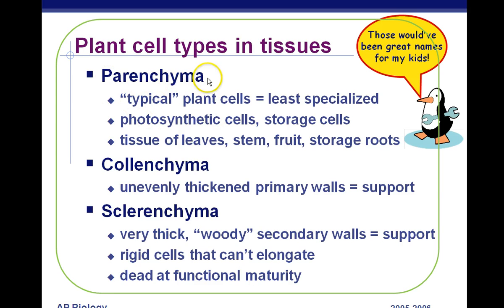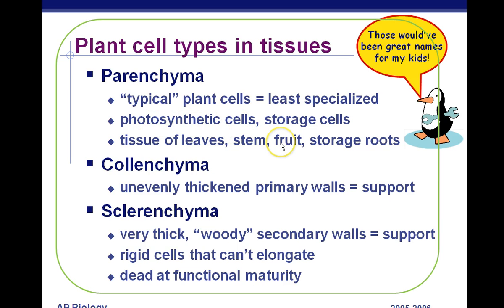Parenchyma — think of it as the parent of the other cells. Some cells just stay as parenchyma; they're least specialized and are storage cells. If you're eating a potato or a carrot, it's mainly parenchyma. Photosynthetic cells are also parenchyma — the mesophyll layer of the leaf is all parenchyma. Fruit is mainly parenchyma as well.